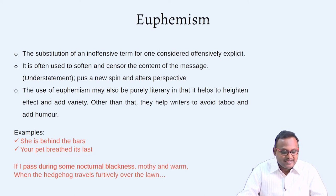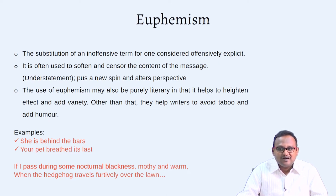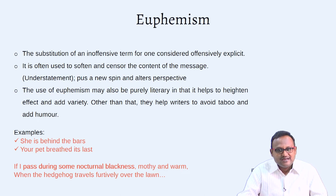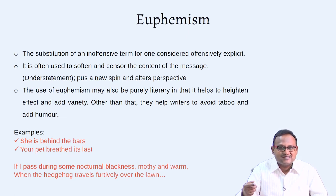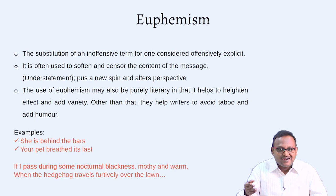Another example in poetry: 'If I pass during some nocturnal blackness, mothy and warm, when the hedgehog travels furtively over the lawn.' Look at the expression — death here is represented as 'nocturnal blackness,' and the idea of somebody dying becomes 'when I pass during some nocturnal blackness.' Euphemism, like metaphor, metonymy, and synecdoche, helps you to bring in some kind of distance — an intended distance — so that when you understand its meaning it comes after a pause and has the capacity to give you a kind of a revelation.